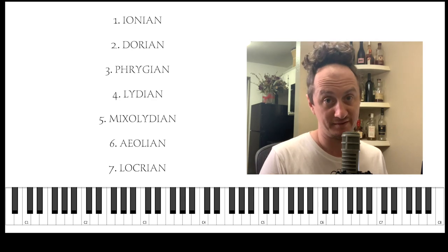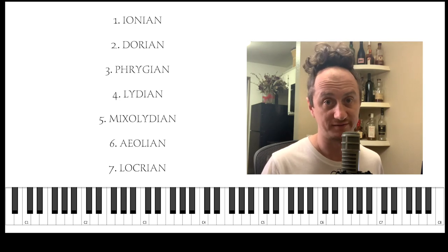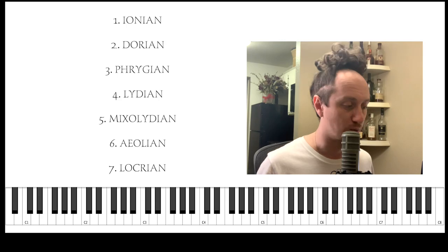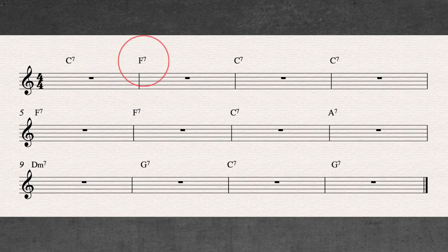So now let me give you a quick example of how you might arrive at some of these chord scales once you know which ones go with what. Let's take a blues in C. The first chord is C7, next chord is F7, back to C7, then F7, F7, F7, C7, A7, Dm7, G7, C7, G7. These are the chords.